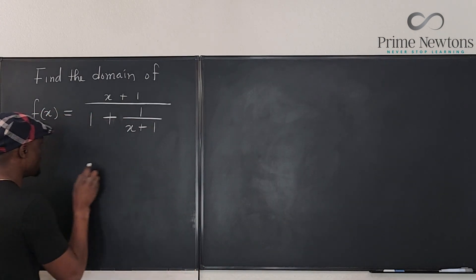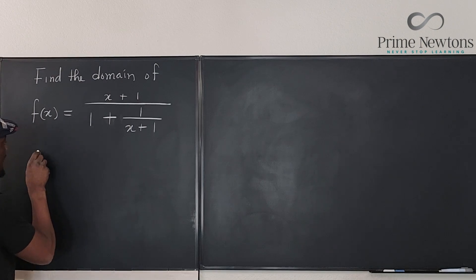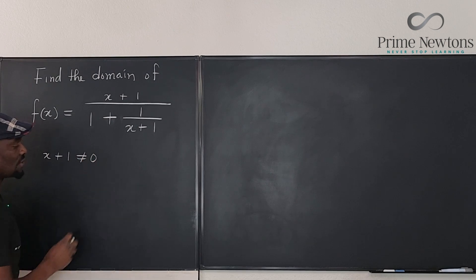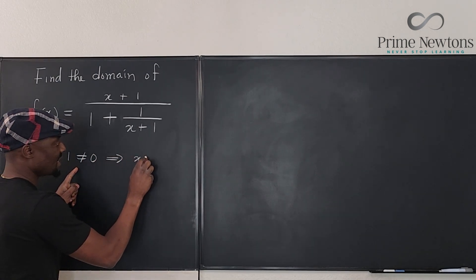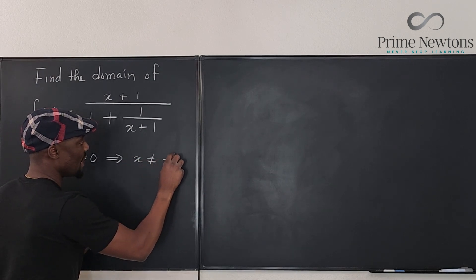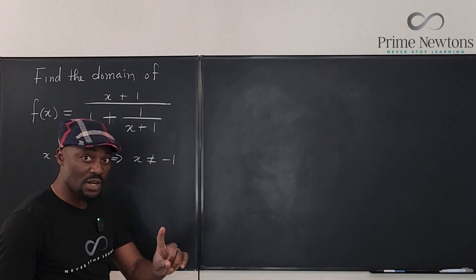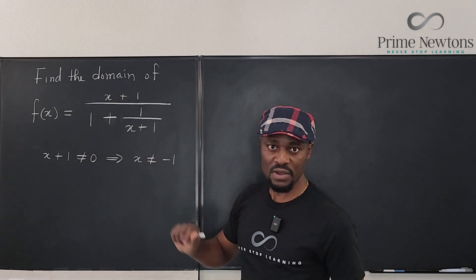So the first way you approach it is to say x plus 1 is not equal to 0. And if x plus 1 is not 0, that implies x is not equal to negative 1. So you've gotten one number you must exclude from the domain of this function.